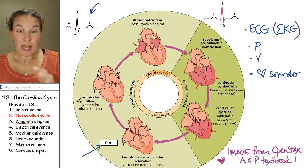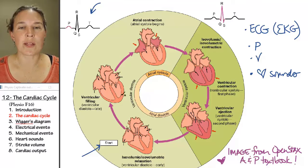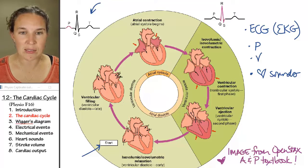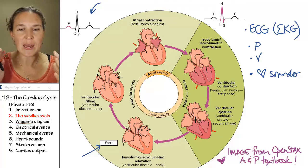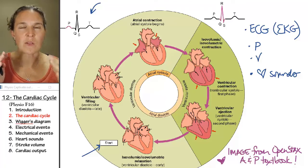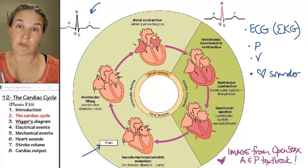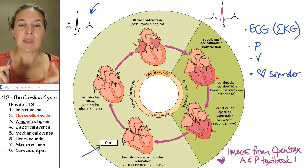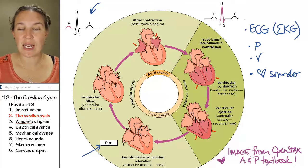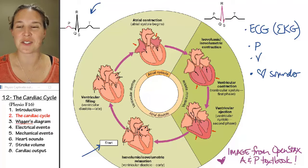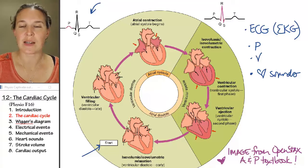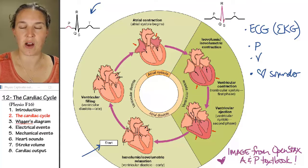Spend just a second to look at this visual and see if you can figure out the events that are happening, where blood is going from one place to the next, and why. This image comes from the OpenStax Anatomy and Physiology text — it's a free and open textbook that everyone has access to, with Creative Commons licensed images.